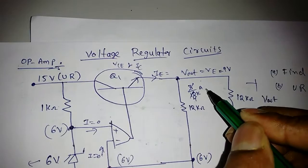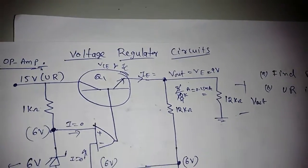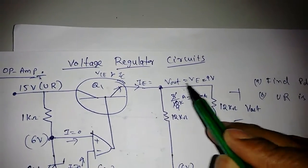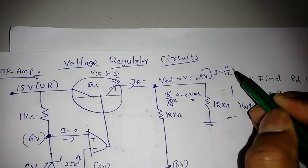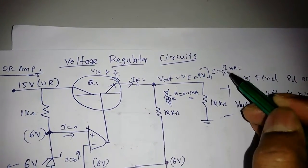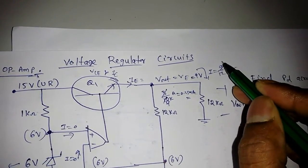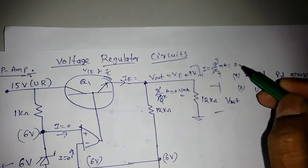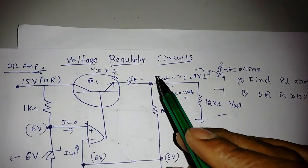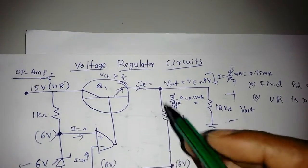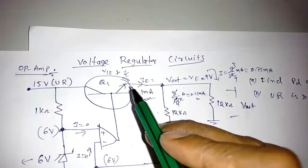Similarly, this current IE is equal to 9 by 12 kilo, so it becomes 9 by 12, which is 3 by 4 or 0.75 milli ampere. Now this current is 0.7 milli ampere and this current is 0.25 milli ampere, so I can get easily IE is equal to 1 milli ampere. So I got IE as 1 milli ampere.